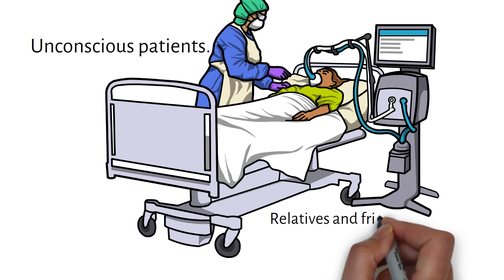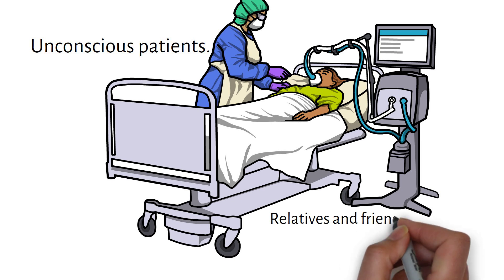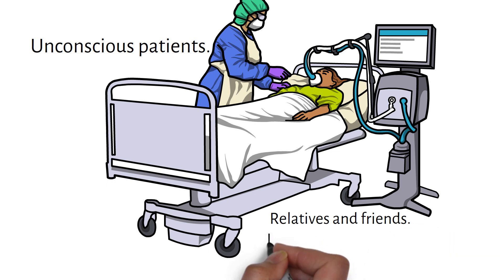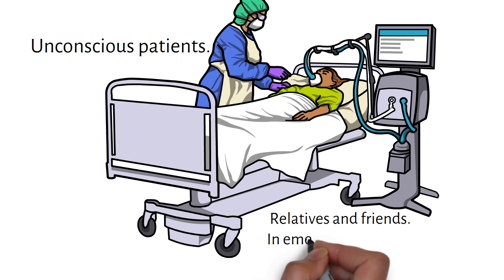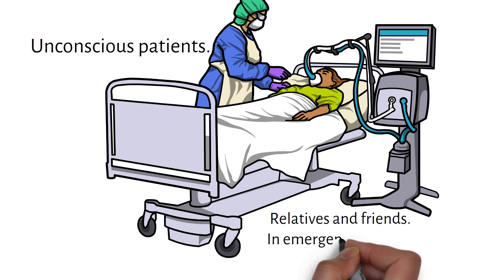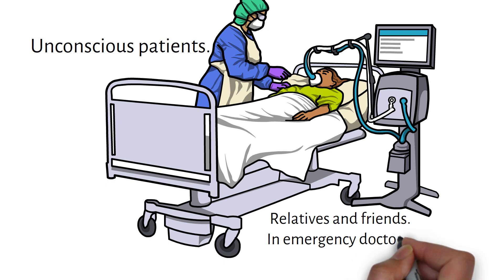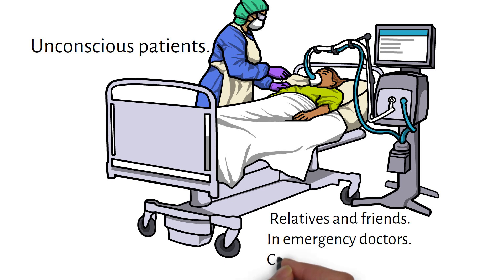Sometimes a patient may not be able to give consent and may not be accompanied by any relatives or friends. This may arise if a patient is brought in after an accident or in a critical state — for example, diabetic ketoacidosis or a heart attack. In such cases the doctor must make a decision regarding the treatment. The patient's best interest includes considering whether it is safe to wait until the person can give consent. If the doctor is aware of any religious or moral beliefs relevant to the patient's care, these should be kept in mind during treatment.